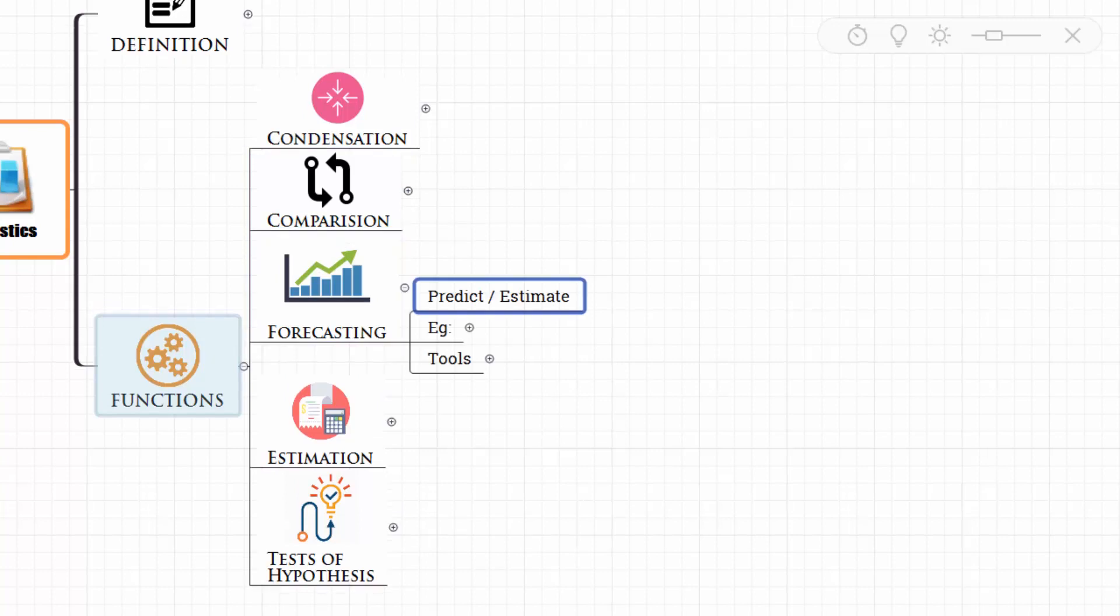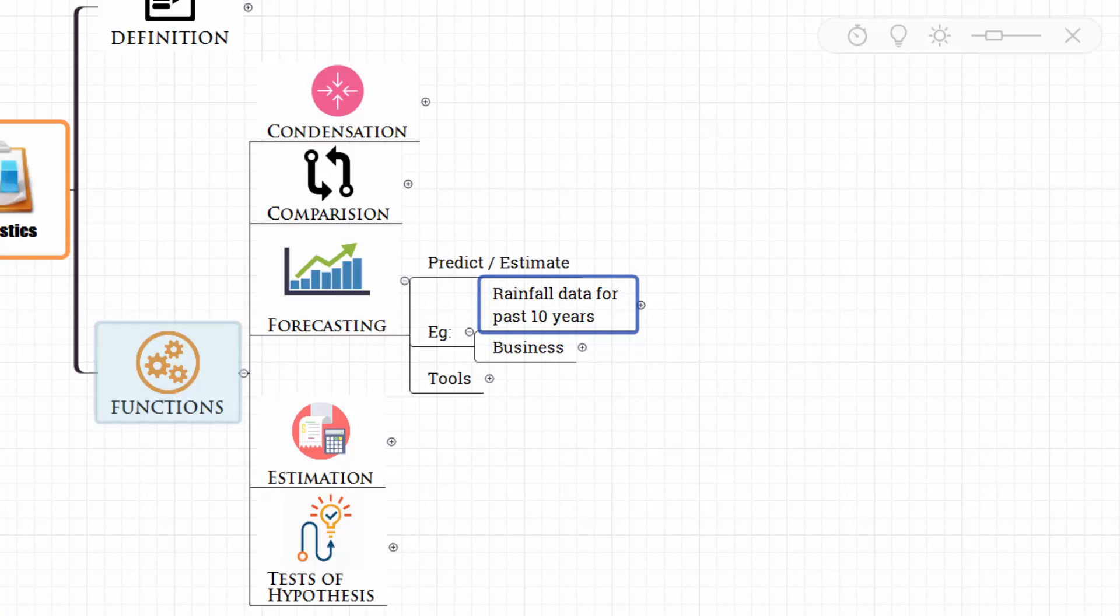Then comes forecasting. Forecasting means predicting or estimating. For example, we have rainfall data for the past 10 years. Then we can predict or forecast the rainfall for the near future.